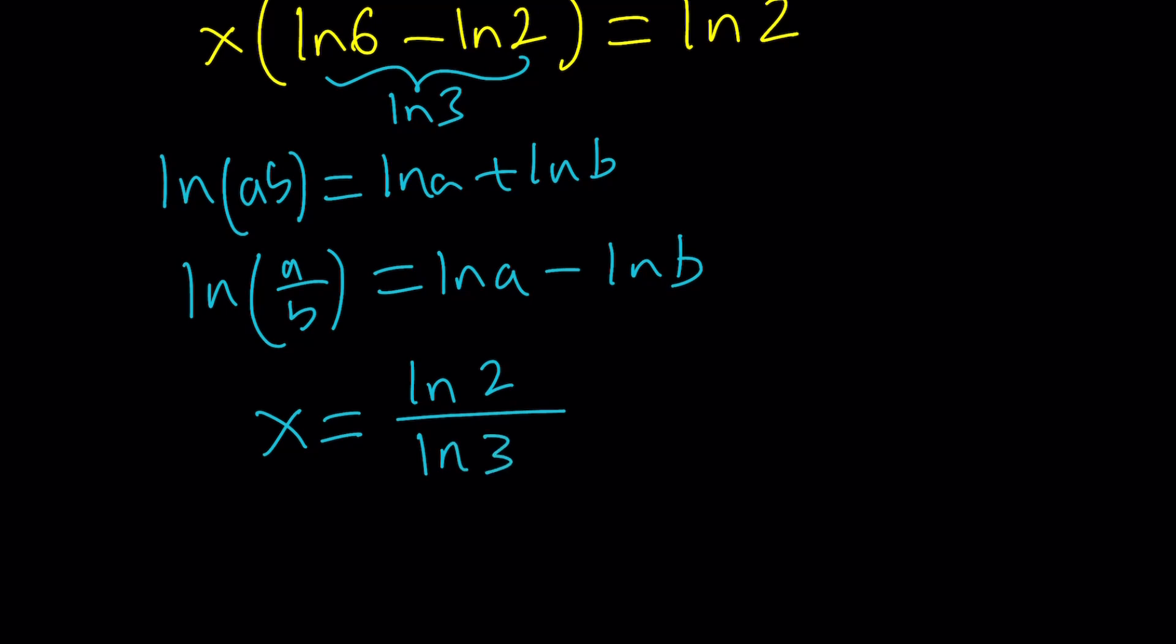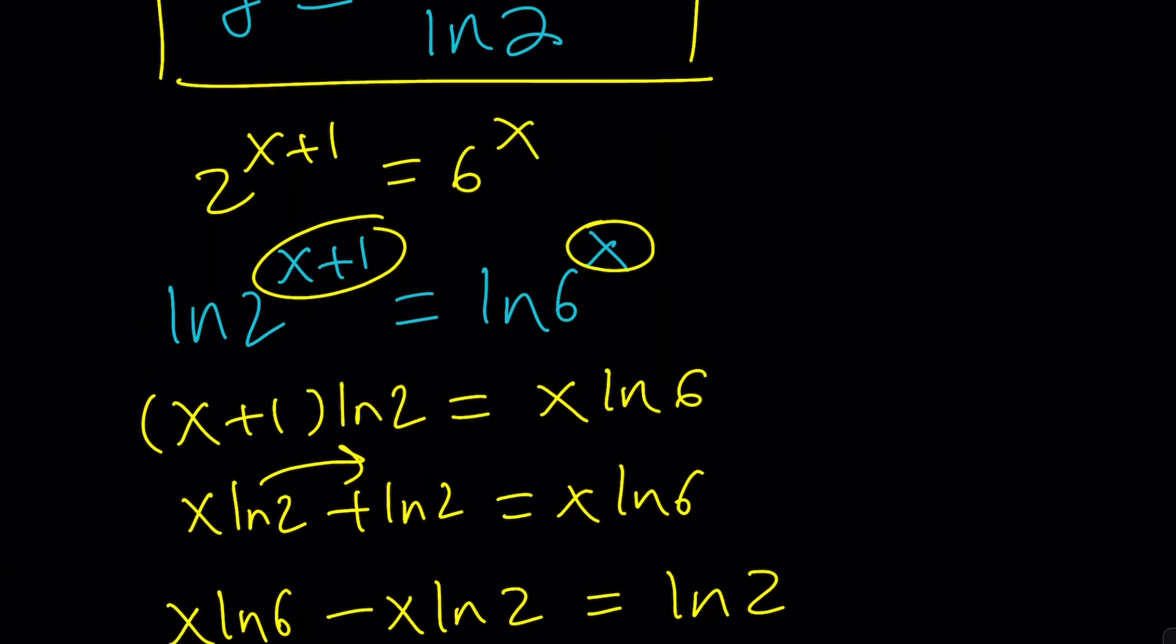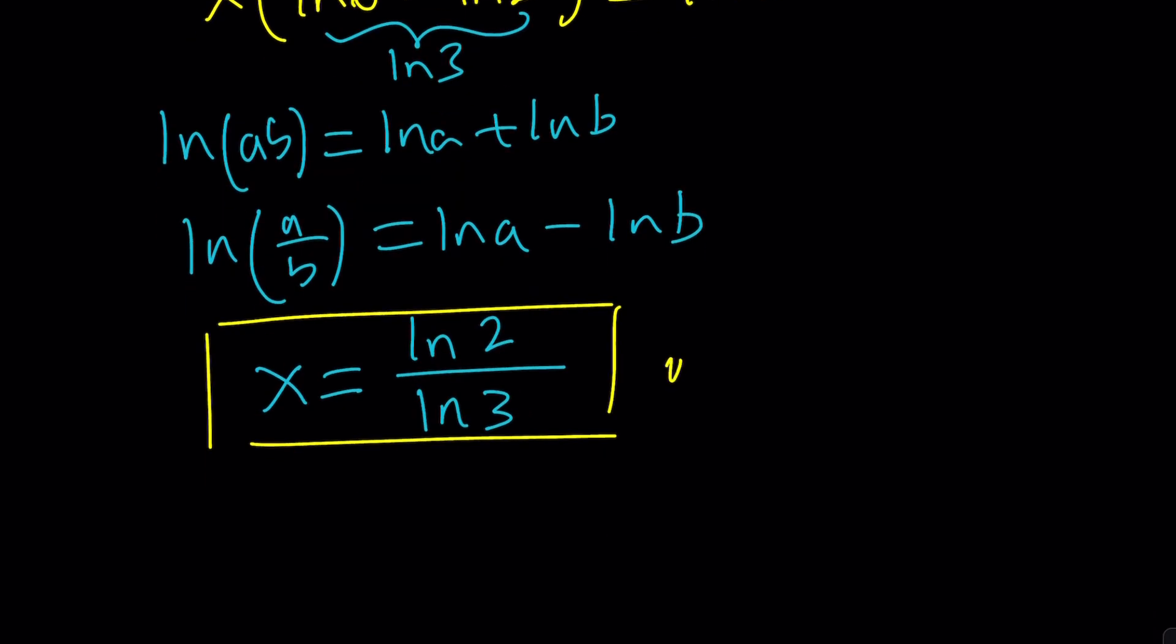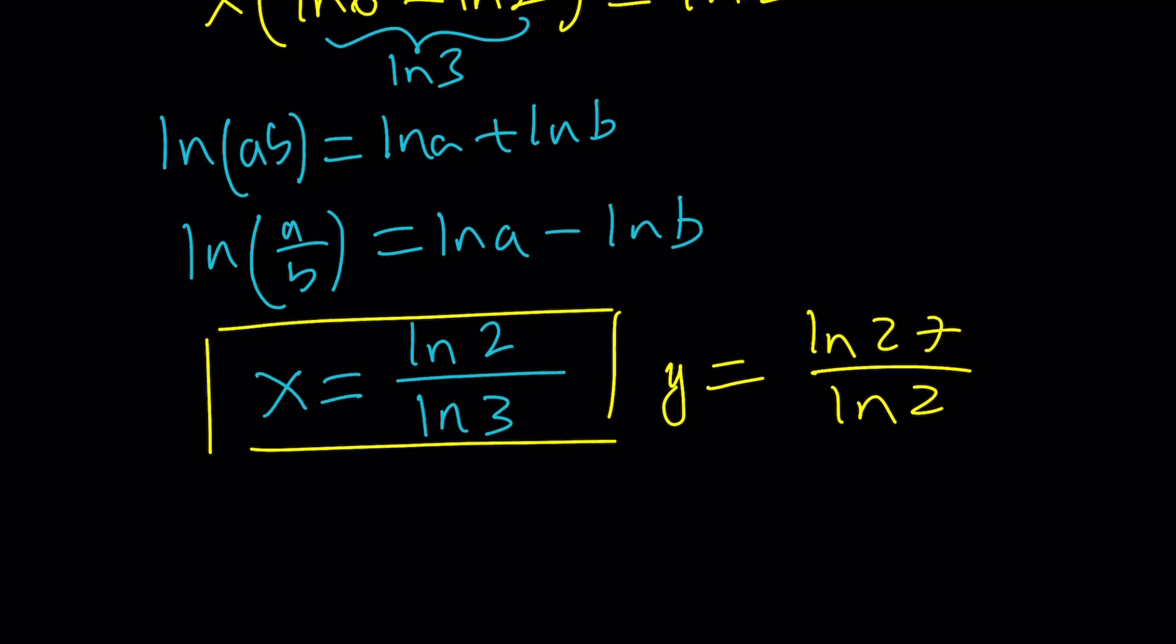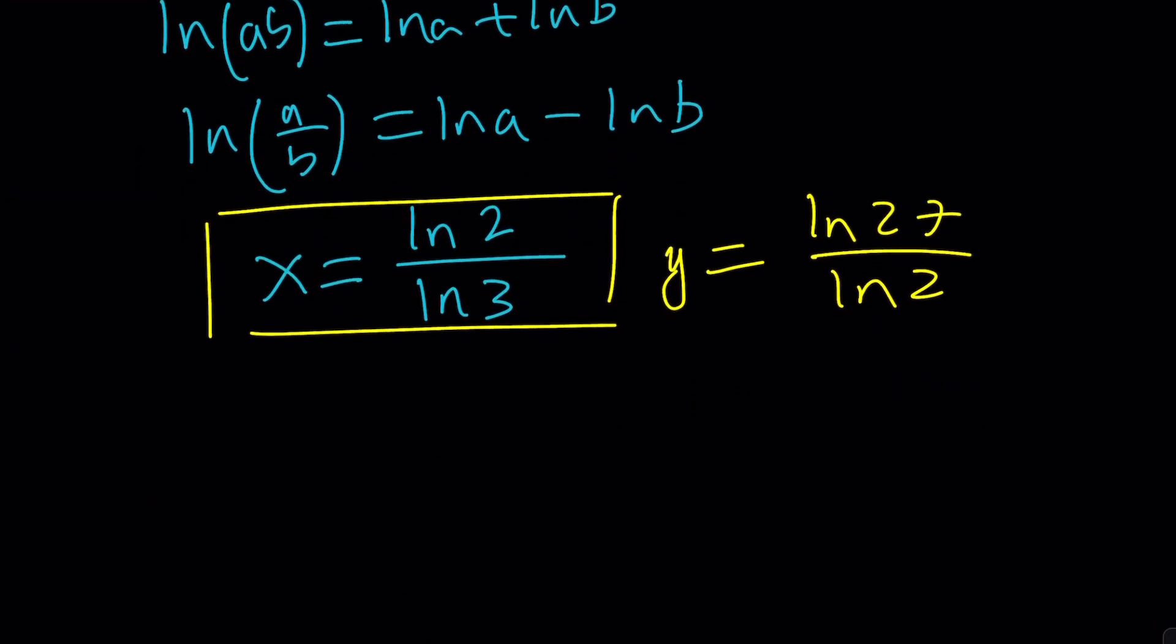So that's the value of X. And we already got the value of Y. Let's go ahead and copy that. Y equals ln 27. Let's go ahead and copy that here. ln 27 over ln 2, I believe. Let me double check. Yes.